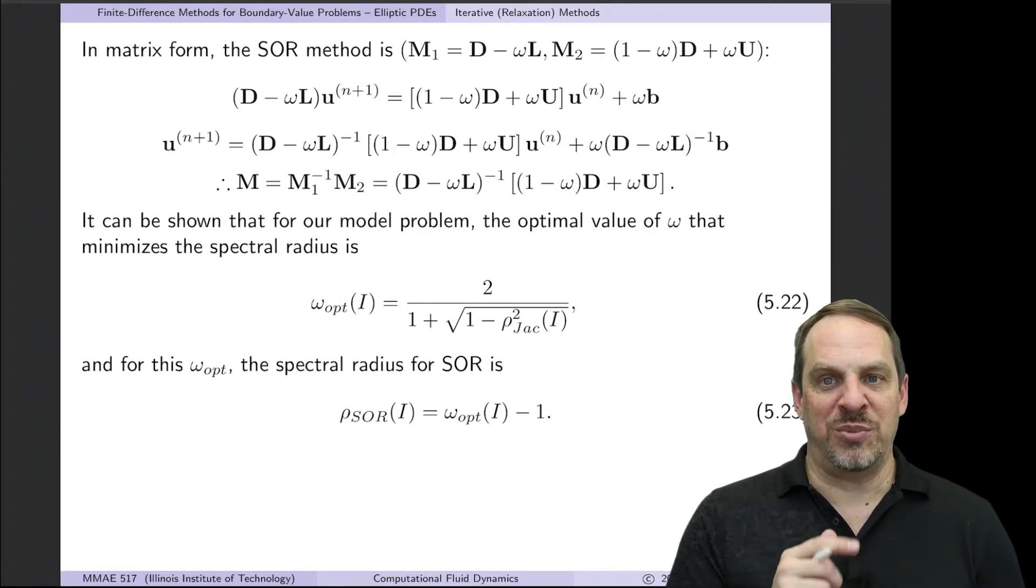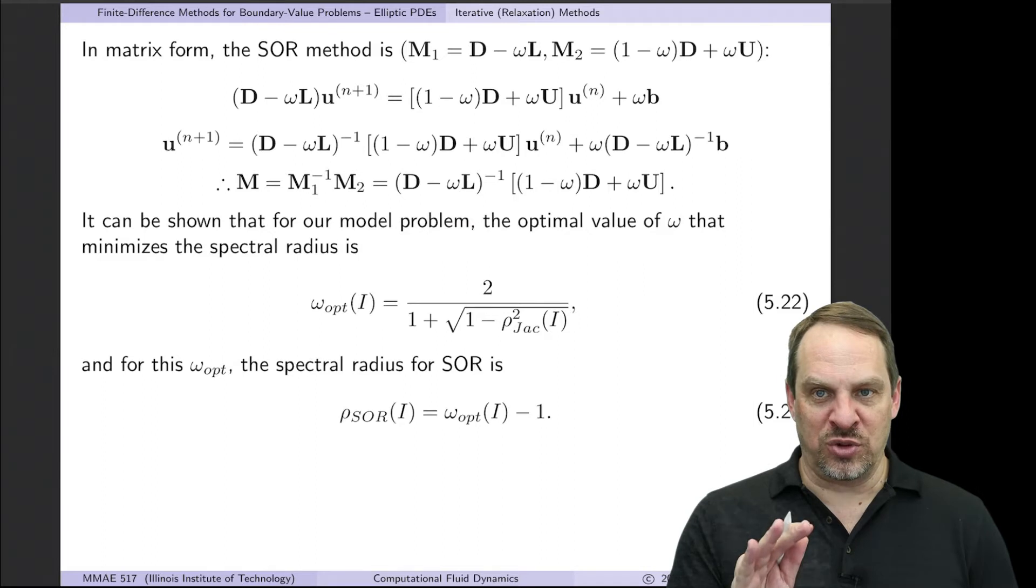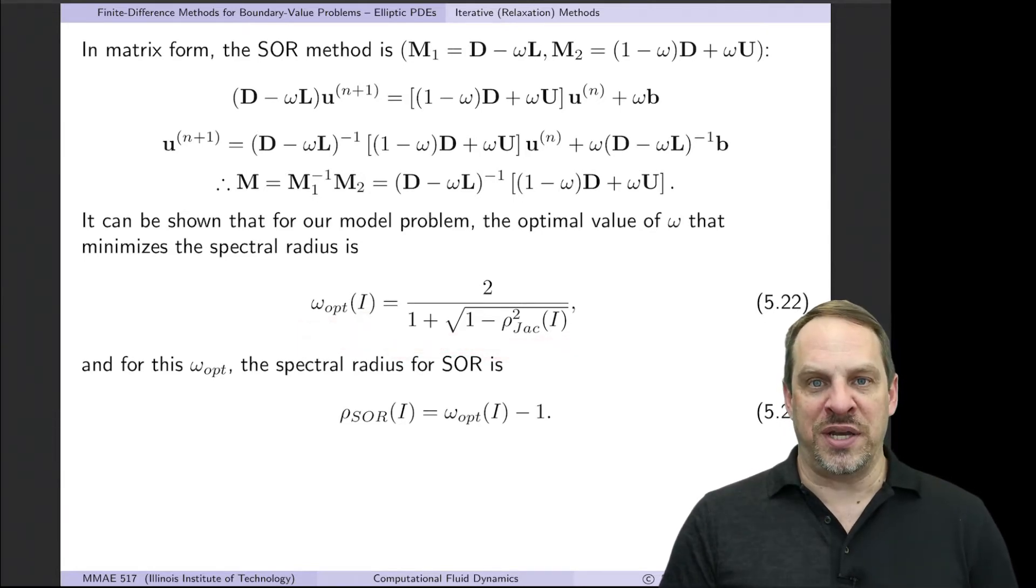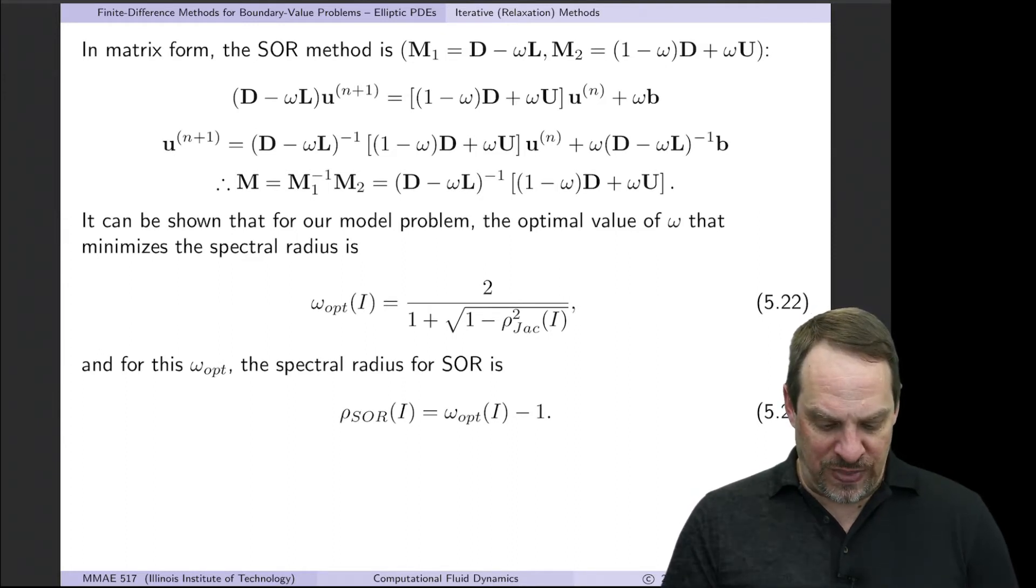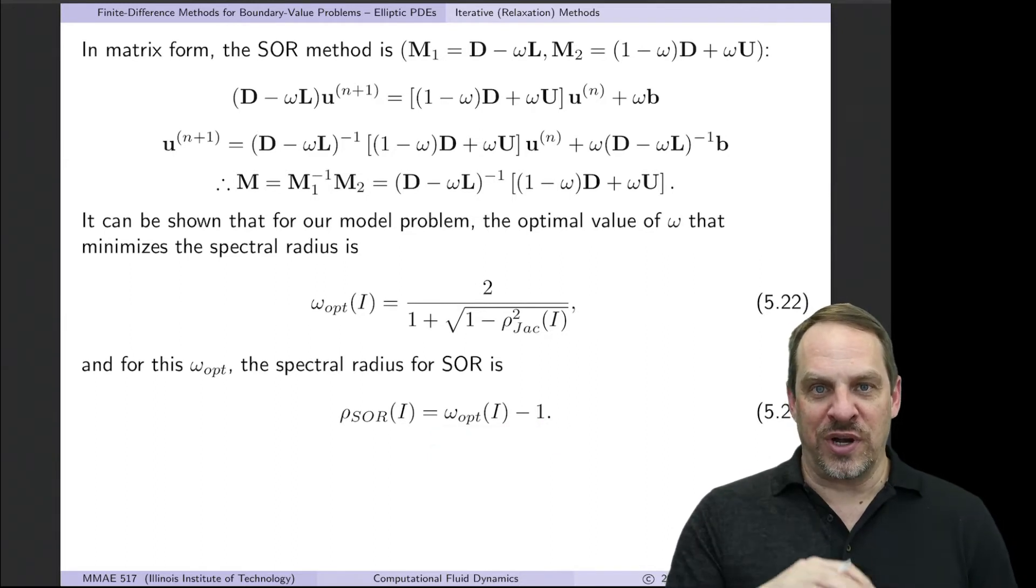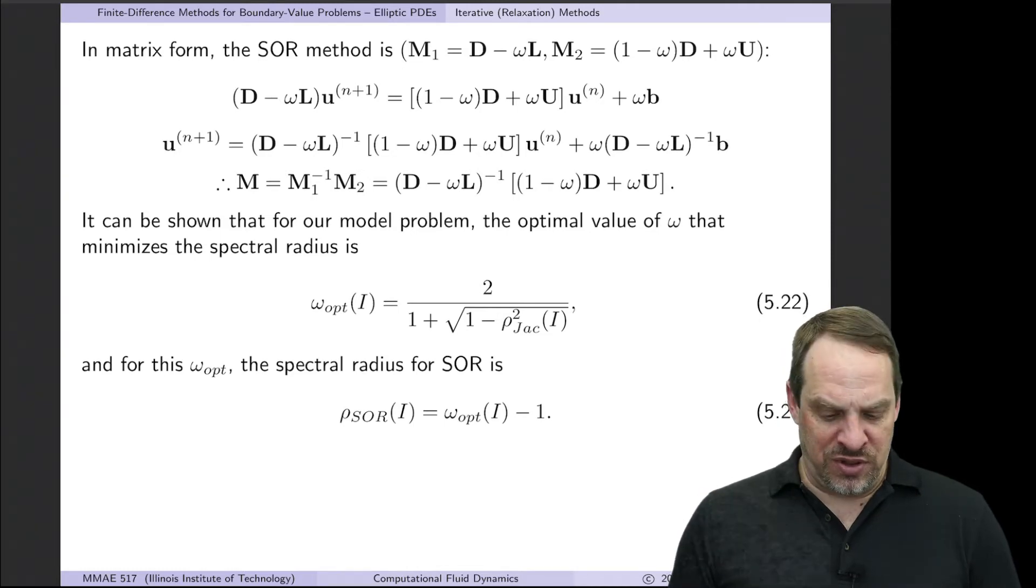So how do I choose omega? And how much does it accelerate the convergence process? Well, it turns out that for our model problem, we know the optimal value of omega. That's not normally the case. Normally, we'll have to find omega using trial and error. But for our model problem, we know that the optimal omega is 2 over (1 + sqrt(1 - rho_Jac^2)). And we also know that the spectral radius for SOR is equal to omega_opt minus 1. Again, these are only true for our specific model problem. But given that, let's analyze to see how much faster this might be.